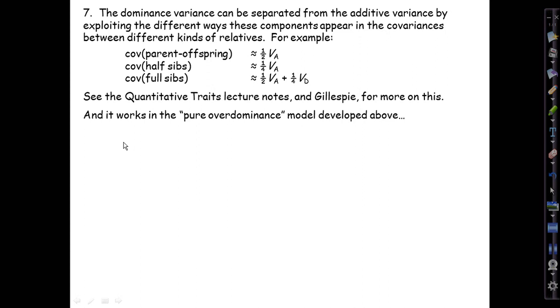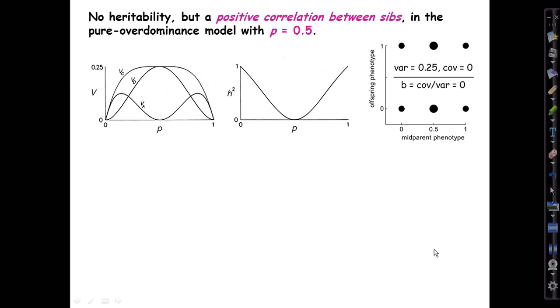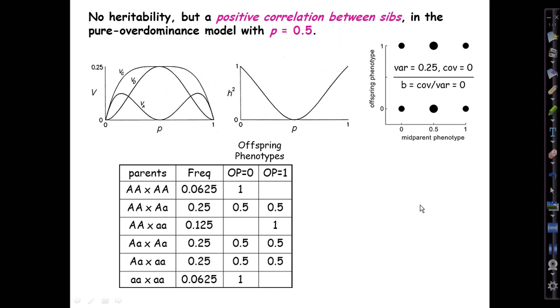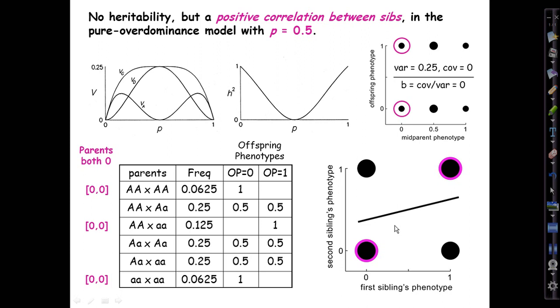This formula also works in the pure over-dominance model we developed. Here it is again to remind you. Here was the scatterplot for mid-parent and offspring values at an allele frequency of half when there's a lot of variance but all of it is dominance. The variance is a quarter, the covariance is zero, so there's no regression—the covariance over the variance is zero.